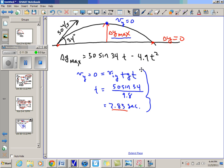All right, well now I can plug this t value into my equation here. So I get 50 sine 34 times 2.85 minus 4.9 times 2.85 squared. And that gives me 40 meters. That's the final answer.